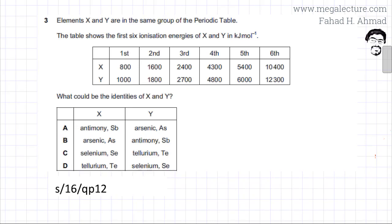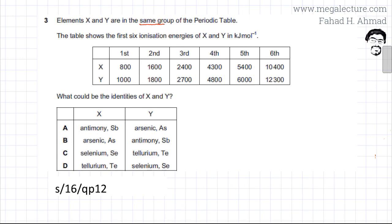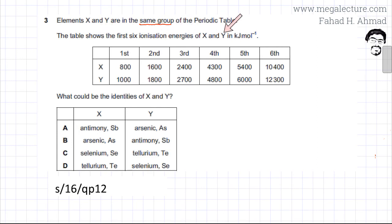This fast paper question states that elements X and Y are in the same group of the periodic table. Being in the same group means they have the same number of valence electrons or outermost electrons. The table shows the first six ionization energies of elements X and Y.